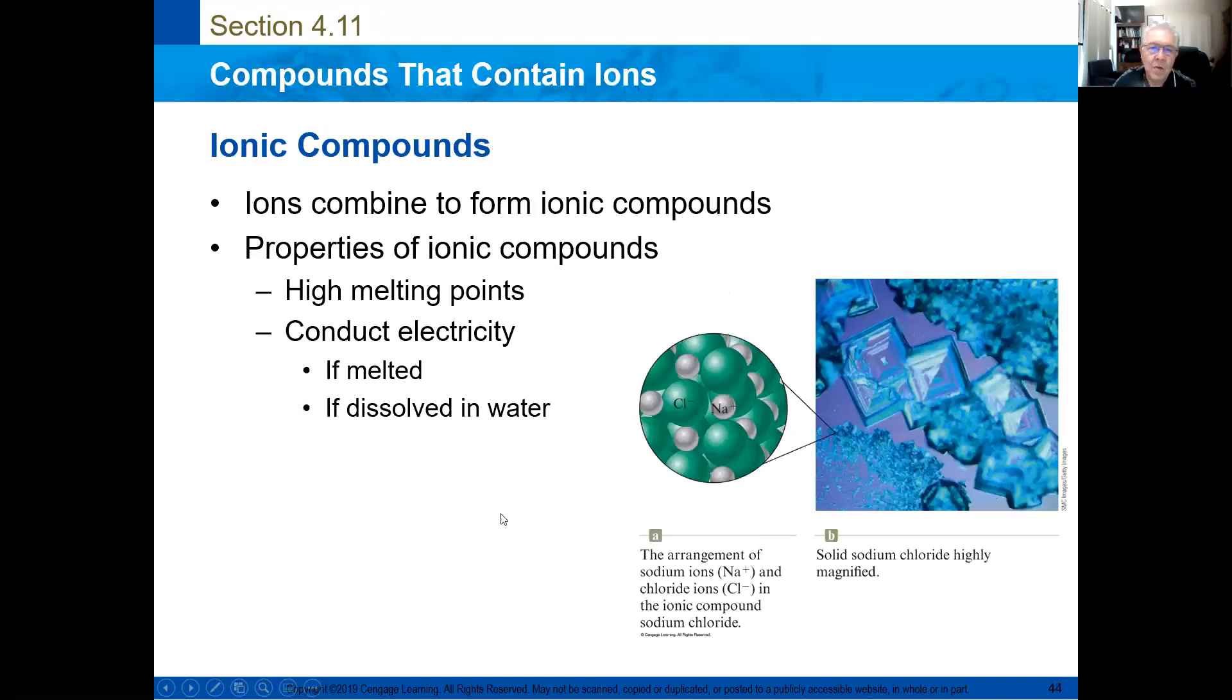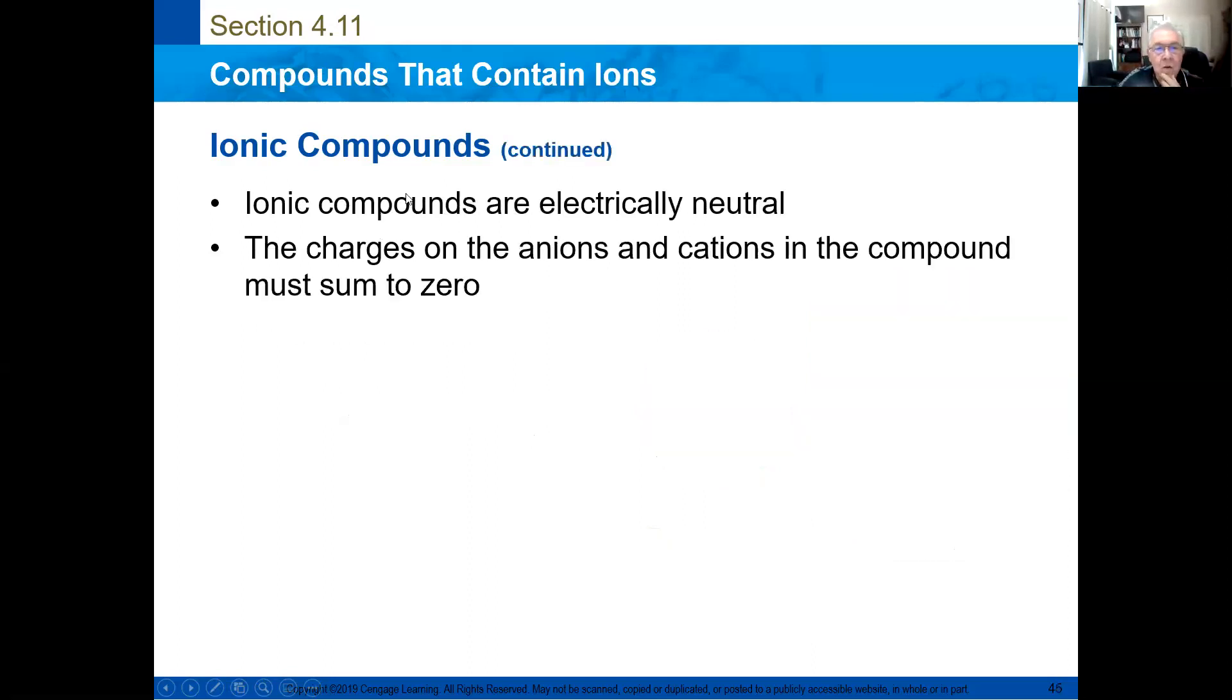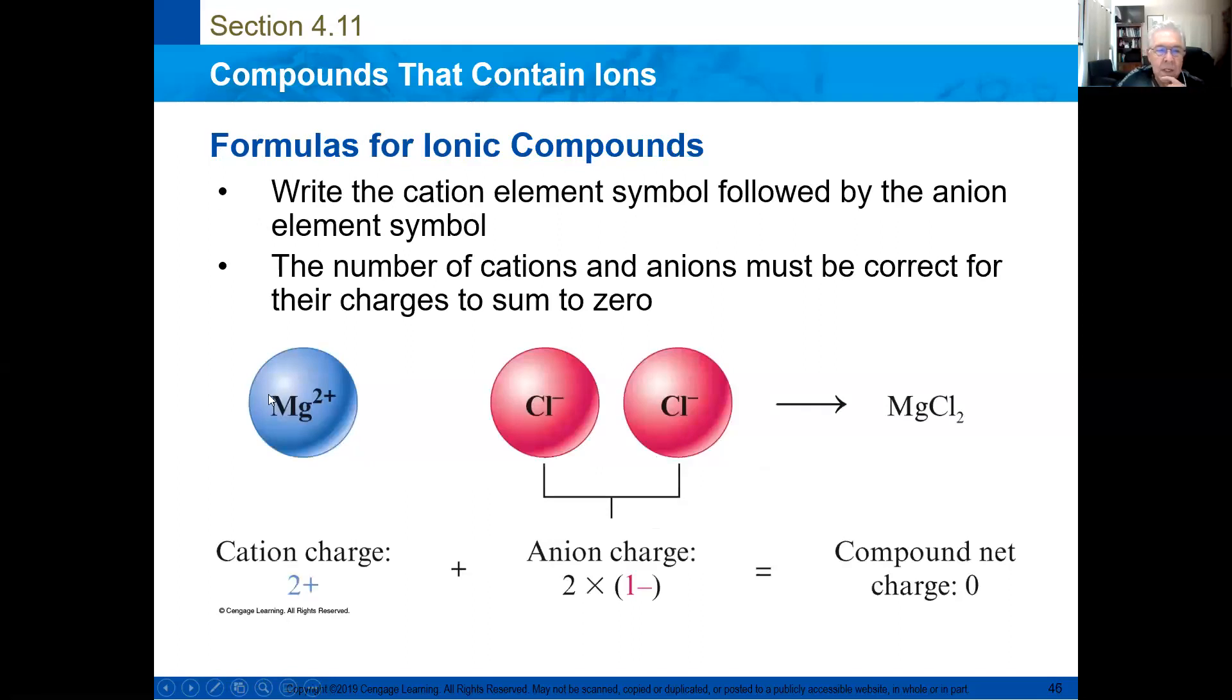Ionic compounds, those that are made by ions. The properties of ionic compounds are high melting points, conduct electricity only if they are melted or dissolved in water. Ionic compounds are electrically neutral. Charges on the ions and cations in the compound must sum to zero. For example, in this compound you have two positive and two negative. Well, the compound charge is zero.